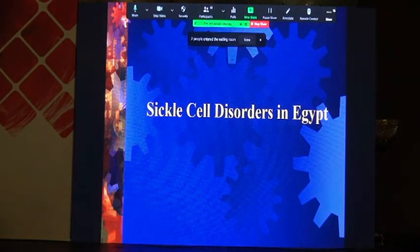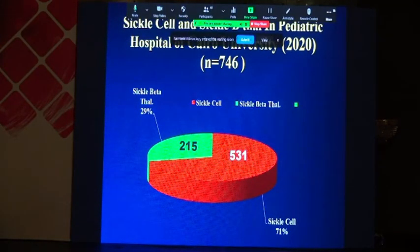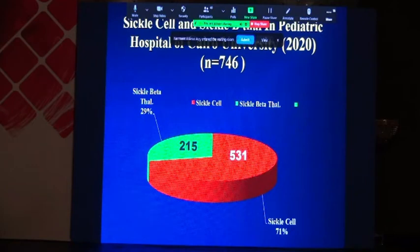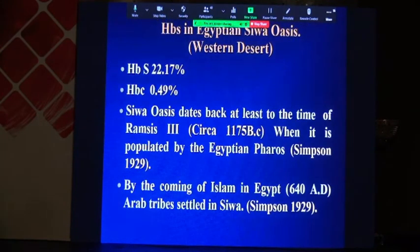What about sickle cell disease in Egypt? In our hematology clinic at Cairo University, Abu Rish Hospital, we have around 746 cases — most are sickle cell anemia, and 215 are sickle beta-thalassemia. Most of these patients are coming from the oases. Siwa Oasis has a very high carrier rate, amounting to 22.1%, which is very high.